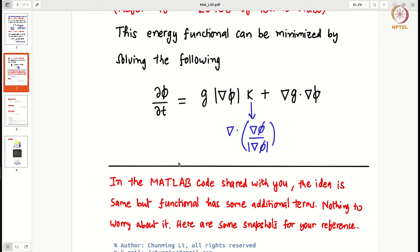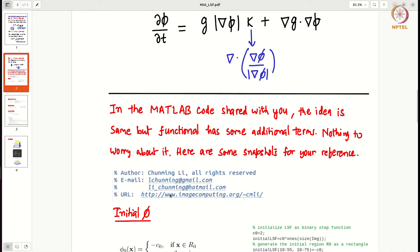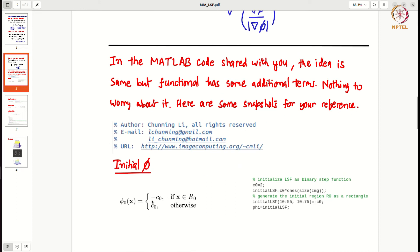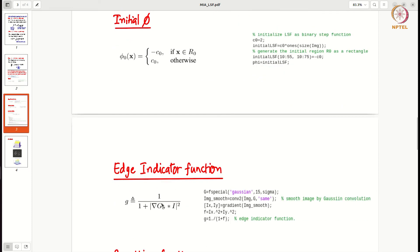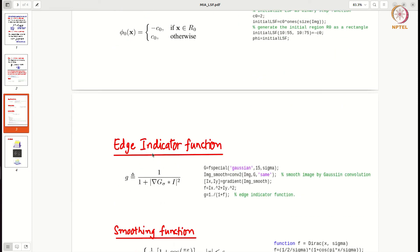For example, in this code you will see we start with some initial phi, for example this binary step function. Then we have the same edge indicator function that sir taught in the class, 1/(1 + |∇(Gσ * I)|²). So this is how you implement it in MATLAB. I am just attaching some snapshots of that code.